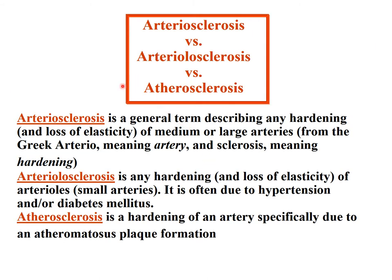Before we start the pathogenesis, we have to specify some terminology. Arteriosclerosis describes any hardening or loss of elasticity of medium or large arteries — coming from the Greek 'arterio' meaning artery, and 'sclerosis' meaning hardening. Arteriolosclerosis is any hardening and loss of elasticity of the arterioles, the small arteries, often due to hypertension and diabetes. Atherosclerosis is the hardening of an artery specifically due to atherosclerotic plaque formation. So there are three distinct terms.